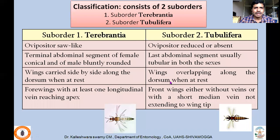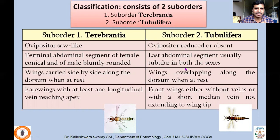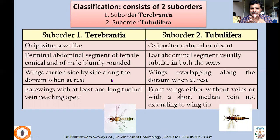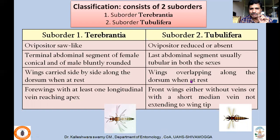Coming to classification: Thysanoptera consists of two suborders — suborder Terebrantia and suborder Tubulifera. In Terebrantia, the ovipositor is saw-like. In Tubulifera, the ovipositor is reduced or absent; the terminal abdominal segment of the female is conical and of the male is bluntly rounded, whereas in Tubulifera the last abdominal segment is tubular in both sexes. In Terebrantia, wings are carried side by side along the dorsum at rest; in Tubulifera, wings overlap along the dorsum. Terebrantia wings have at least one longitudinal vein reaching the apex; in Tubulifera, wings either lack veins or have only a short median vein not reaching the wing tip.